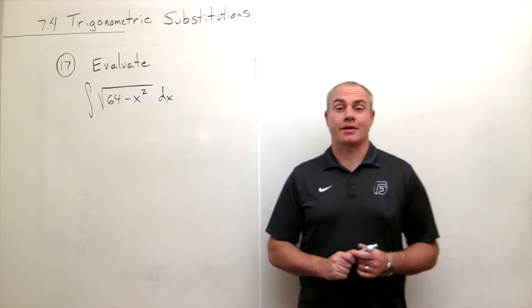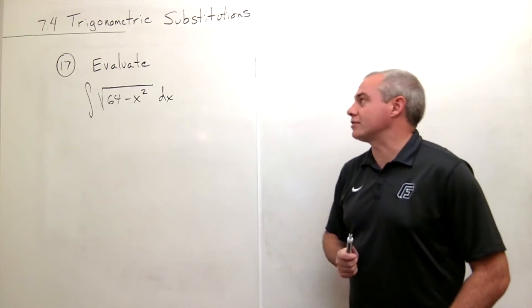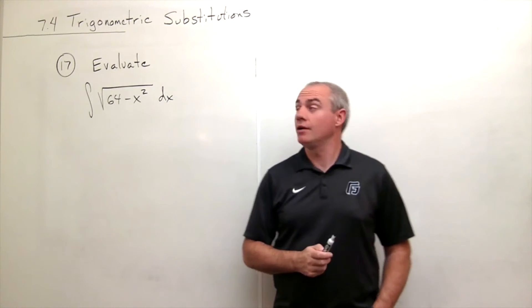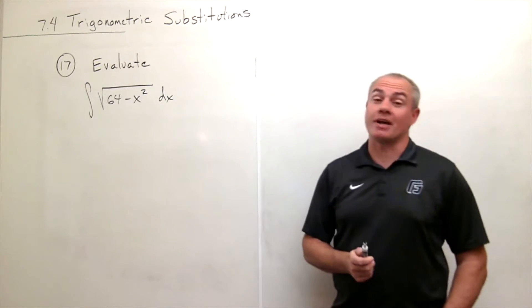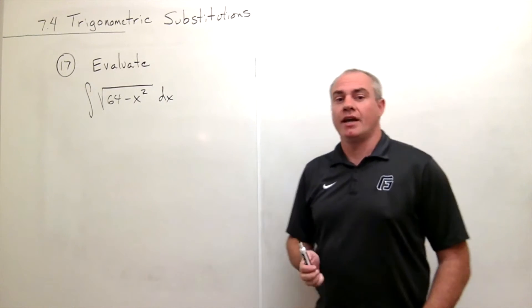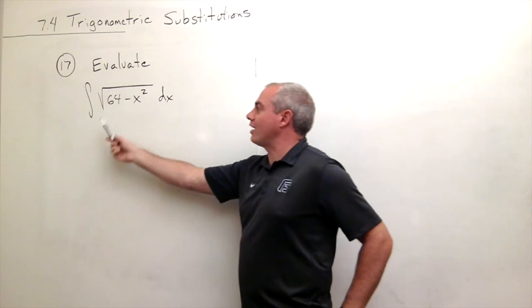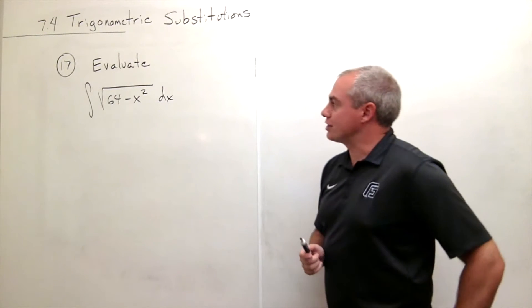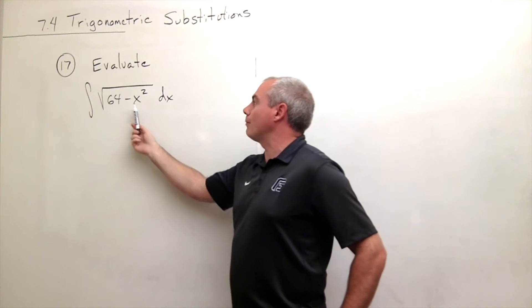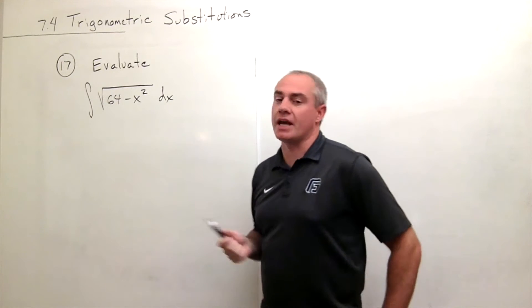I'm the Calculus Professor, and today I'll be talking to you about trigonometric substitution. Today I'd like to talk to you about section 7.4 on trigonometric substitution, and we're going to start with number 17, which asks us to evaluate the integral of the square root of 64 minus x squared dx.